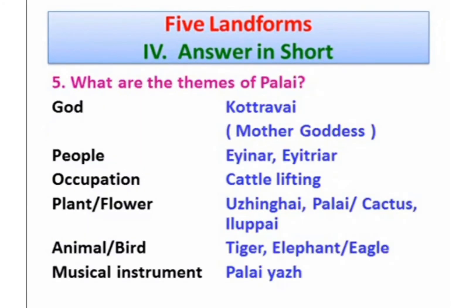Fifth one: what are the themes of Palai? God is Kottravai, the Mother Goddess. People in Palai. Occupation: cattle lifting. Plant or Flower: Ulliniyai, Palai cactus, Ilupai. Animal: Tiger, Elephant. Bird: Eagle. Musical Instrument: Palai Yawl.